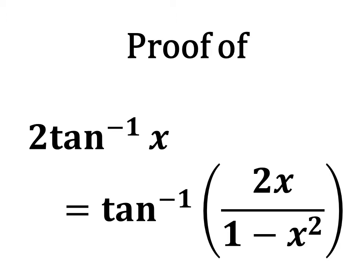It can also be said as 2 times arctangent of x is equal to arctangent of 2x upon 1 minus x squared, as inverse of tangent is also known as arctangent.